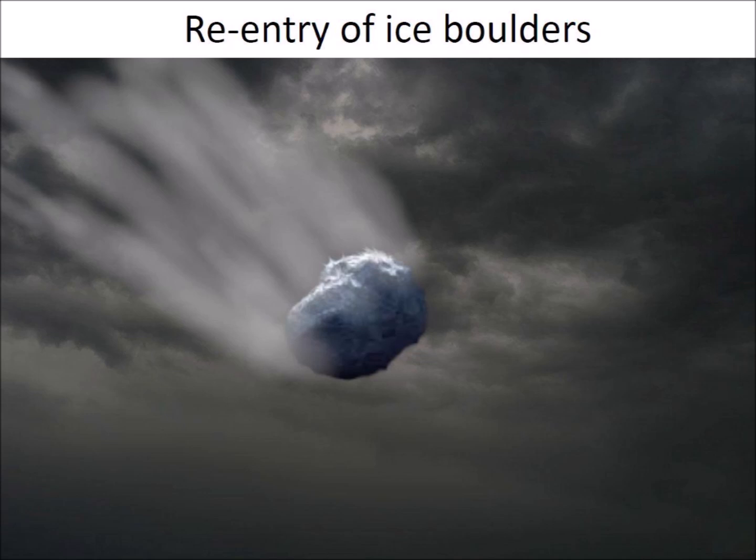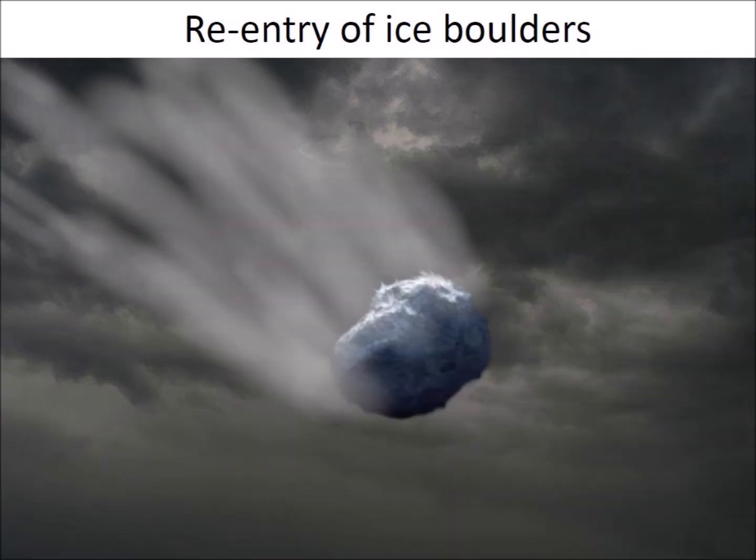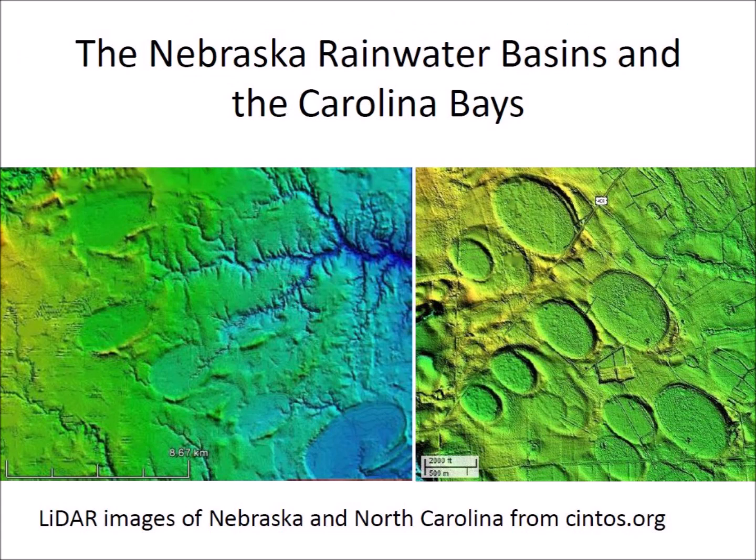Atmospheric ablation of the ice boulders produced vapor trails that blackened the sky. The impacts produced shock waves that liquefied unconsolidated soil. The ice boulders formed inclined conical cavities hundreds of meters wide that quickly transformed into shallow elliptical bays on the trembling, liquefied soil. Today, we can see the result of this saturation bombardment using LiDAR images of Nebraska and North Carolina that revealed the Nebraska Rainwater Basins and the Carolina Bays.